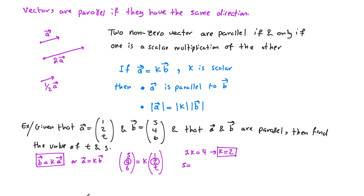Once we have the k value, we can find s and t. We know s = 1 × k = 2. We also know that 6 = k × t, and since k = 2, we get 6 = 2t, so t = 3.